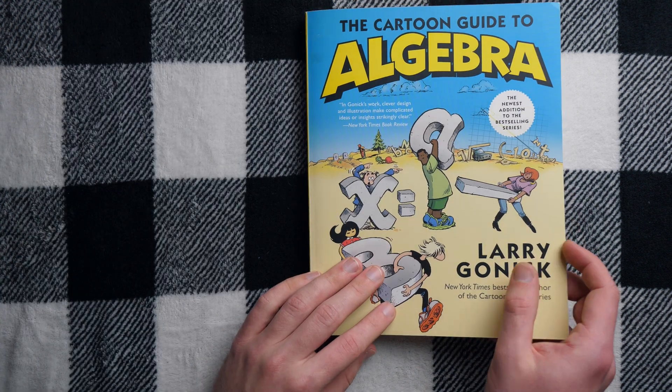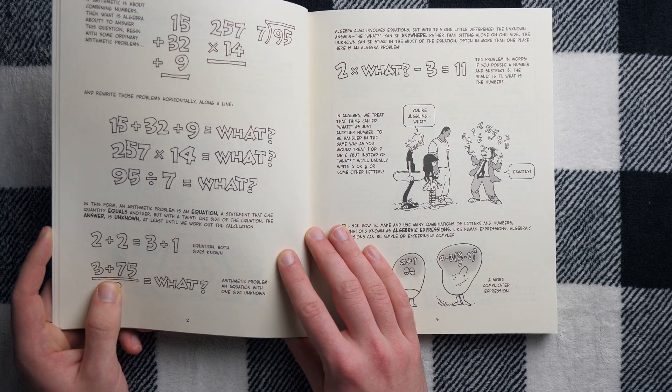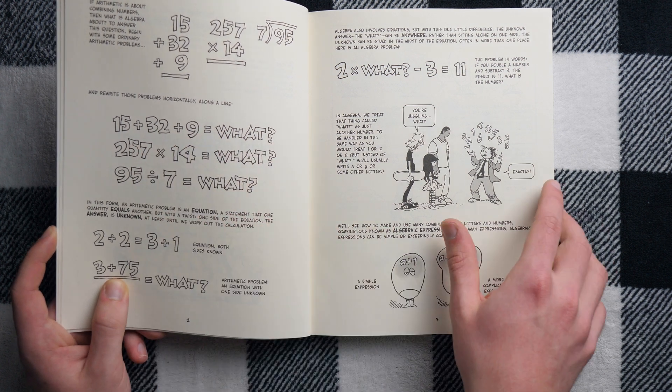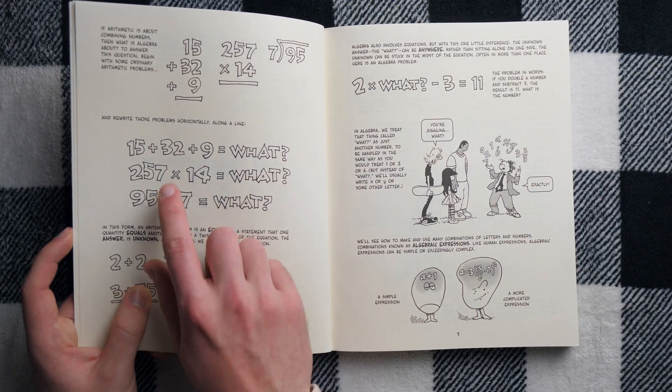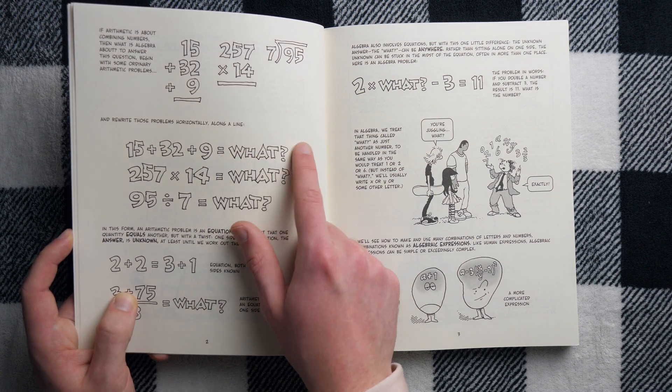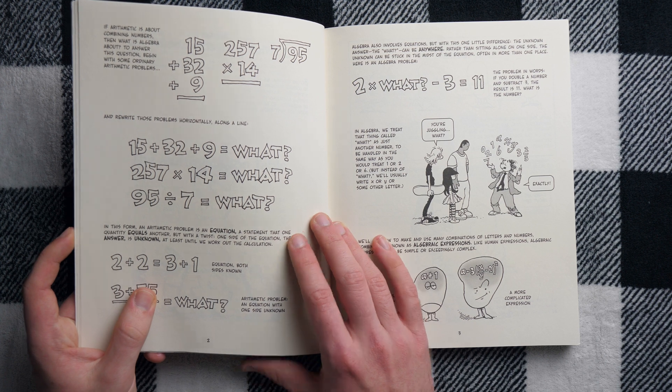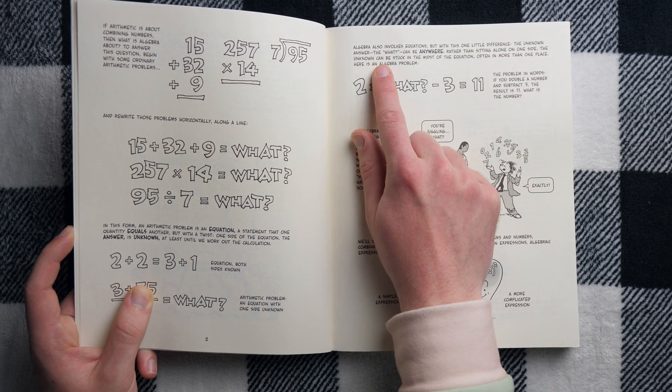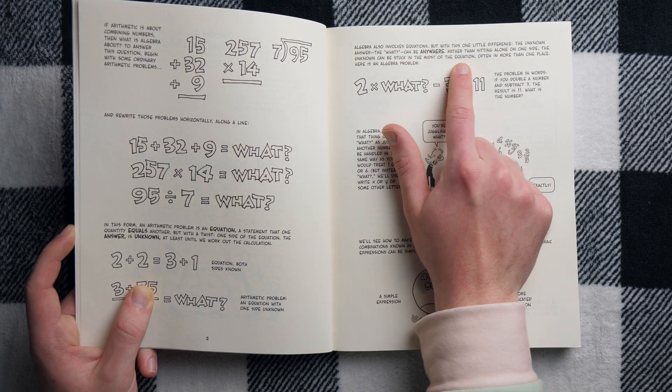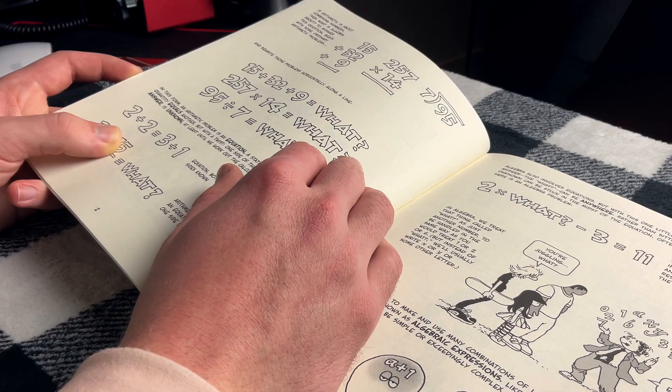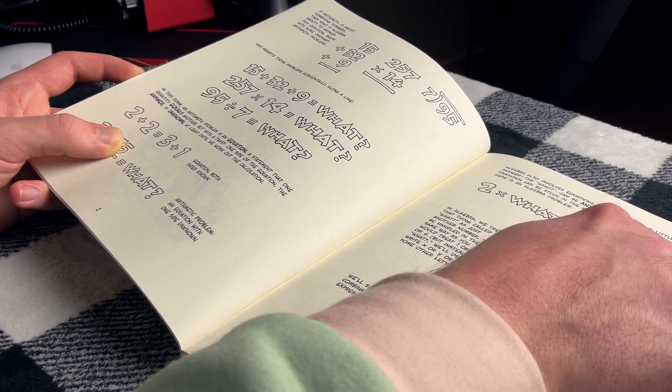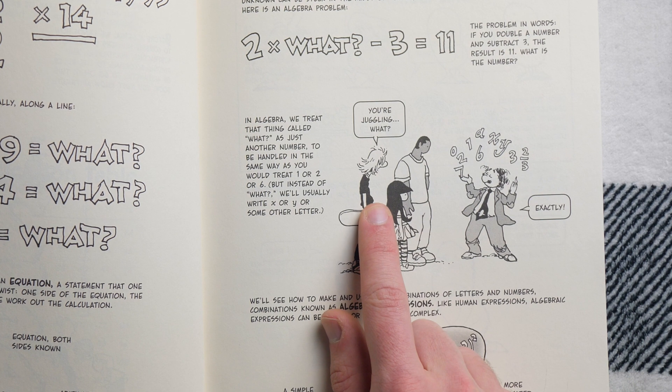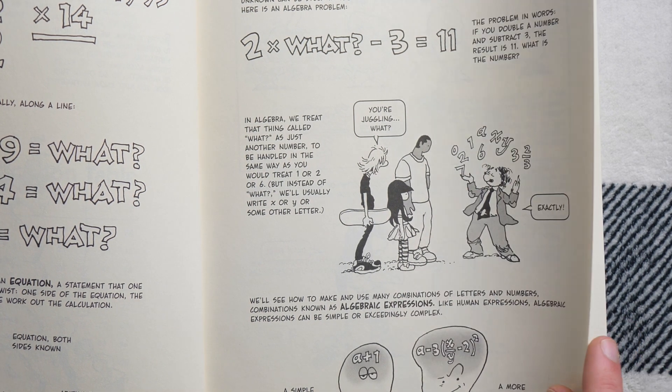And I just really love the way that Mr. Gonic here introduces the idea of algebra. Says like our standard arithmetic, we can think about like this 15 plus 32 plus nine, we can write as an equation where 15 plus 32 plus nine is equal to what. That's what we're always doing, right? Algebra is just like this, he says, except this one little difference. The little difference is that the unknown, the what, can be anywhere rather than sitting alone on one side of the equation. It can be stuck in the midst of the equation often in more than one place. And then he gives you an example. It's such a great explanation. You're juggling what he says. Exactly. Juggling all the letters. Very nice.